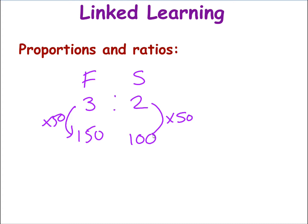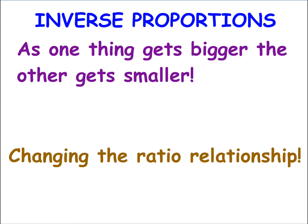Inverse proportions is going to do something slightly different where the scale is still the same. Instead of multiplying both sides, we're going to do the opposite on the other side. So inverse proportions is basically saying as one thing gets bigger, the other thing gets smaller. We're changing the ratio relationship. Instead of doing the same to both sides, we're going to do something different. Where one side gets bigger, the other side is going to get smaller. Let's show you in a practical way what we mean.